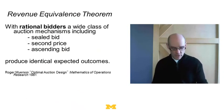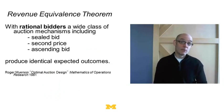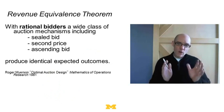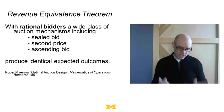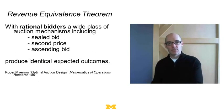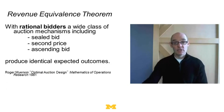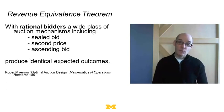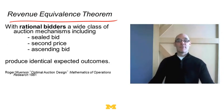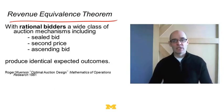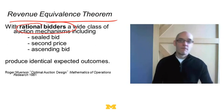There's a theorem proven by Roger Myerson — who won the Nobel Prize for this work — that says if you have rational bidders, there's a wide class of auction mechanisms including sealed bid, second price, and ascending bid auctions such that they get identical expected outcomes. The expected outcomes in all three cases are: highest bidder gets it at the expected value of the second highest bidder. This is called the revenue equivalence theorem. What the model tells us is it doesn't matter how we auction things off if bidders are rational.